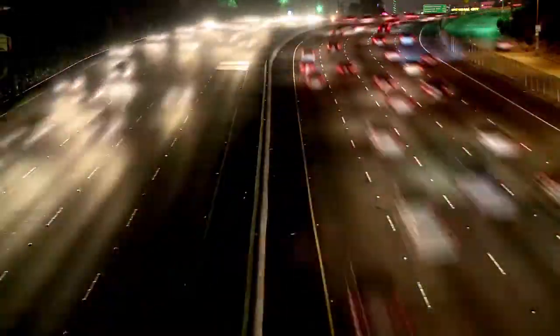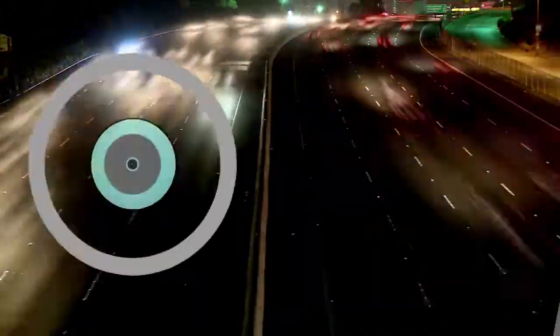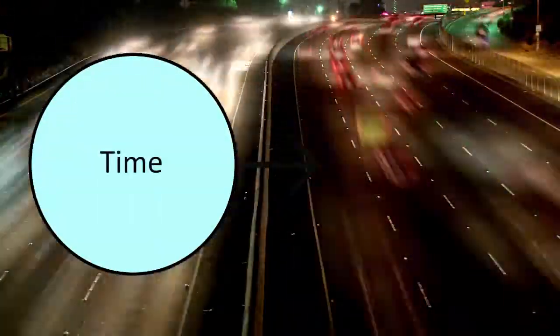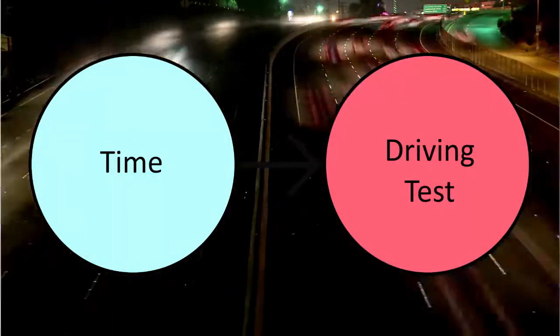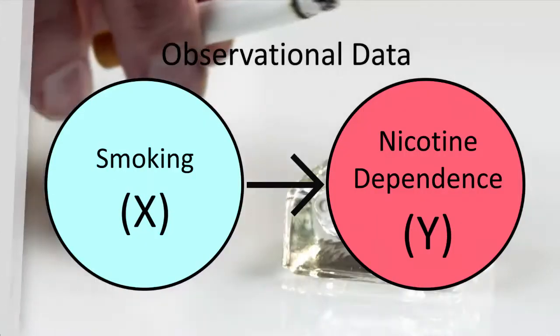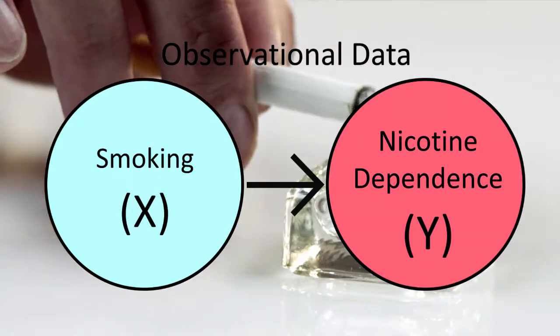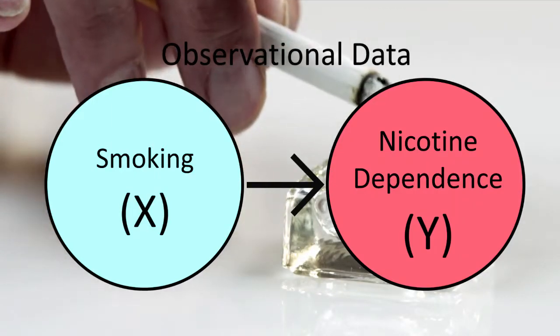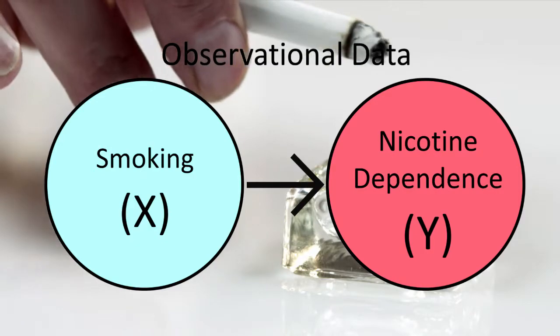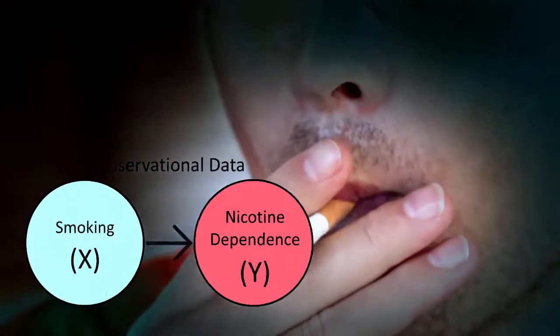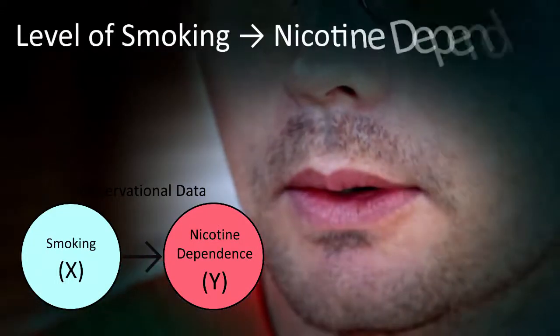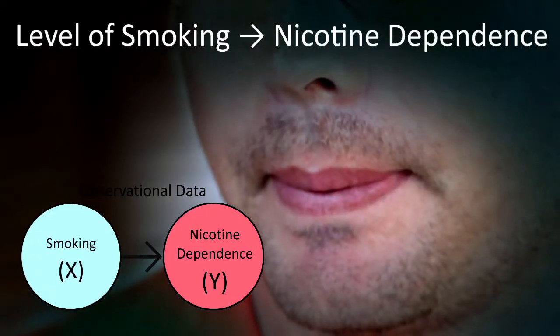If we want to see whether a person's pass-fail outcome on a driving test can be explained by the length of time they practice driving prior to the test, time would be the explanatory variable and the driving test result would be the response variable. For our sample research question, we've decided that smoking will be the explanatory or independent variable and nicotine dependence the response or dependent variable. More specifically, we're interested in the level of smoking at which nicotine dependence is experienced.